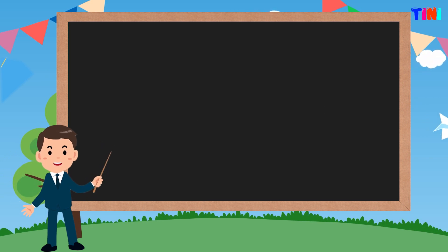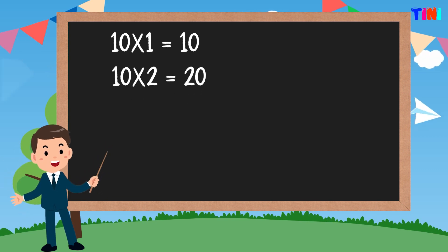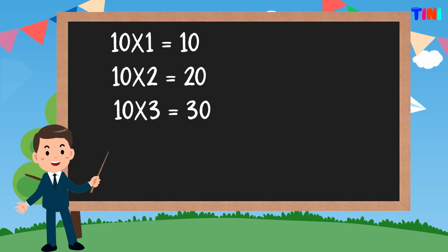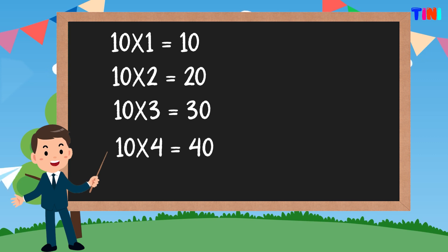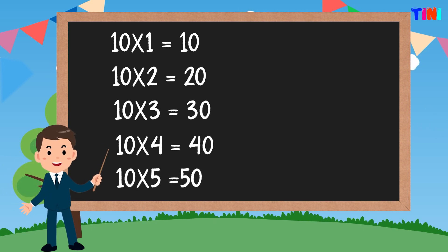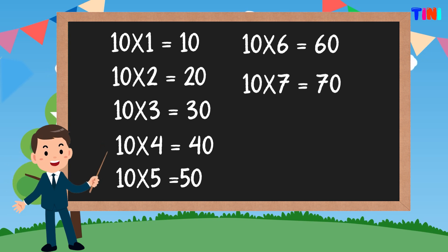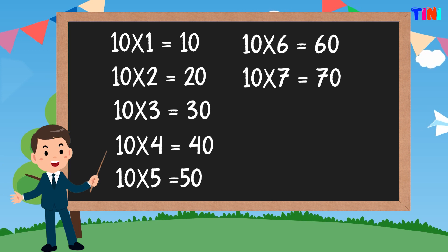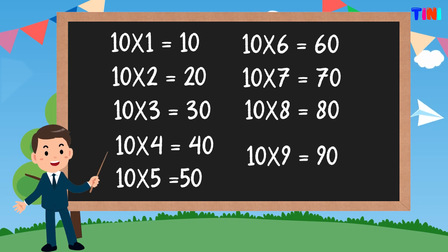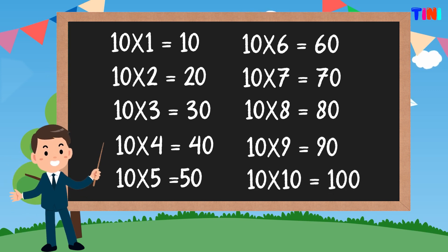10 ones are 10. 10 twos are 20. 10 threes are 30. 10 fours are 40. 10 fives are 50. 10 sixes are 60. 10 sevens are 70. 10 eights are 80. 10 nines are 90. 10 tens are 100.